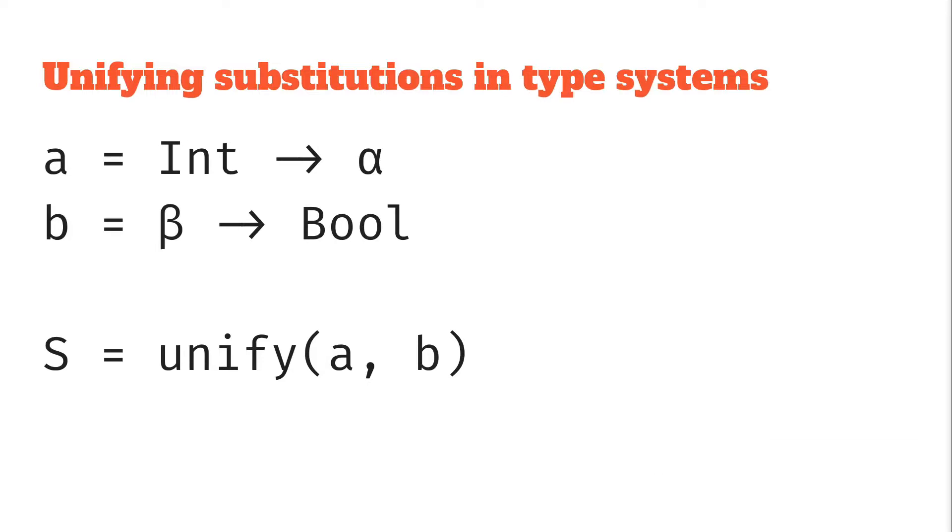So how do they apply to type systems? Well, I think that's best illustrated by an example. Here we have two types: a which is Int → α, and b which is β → Bool.